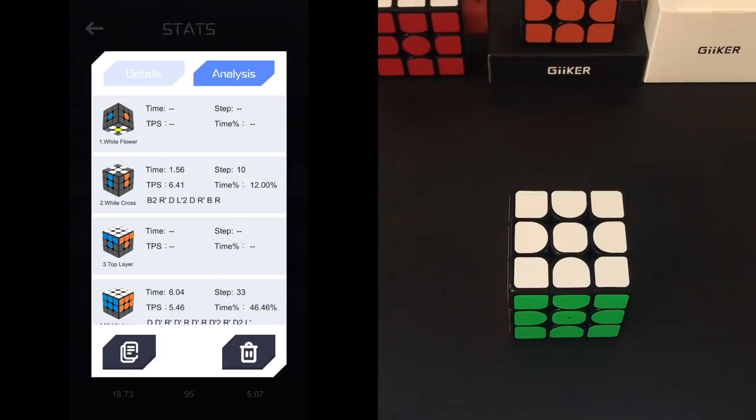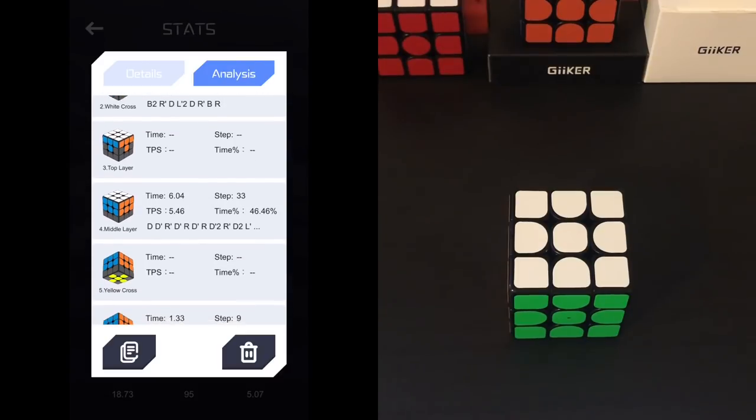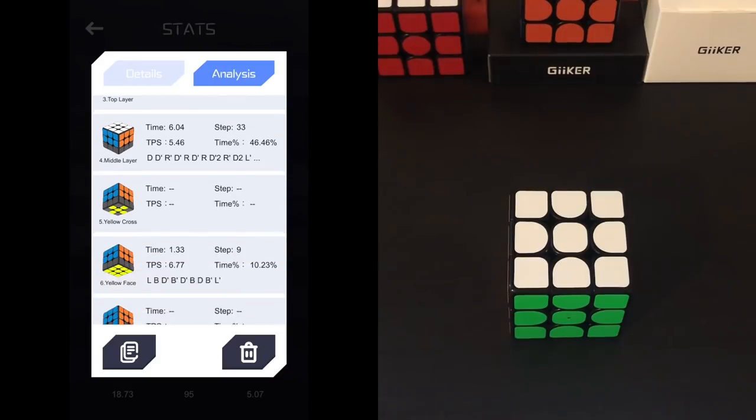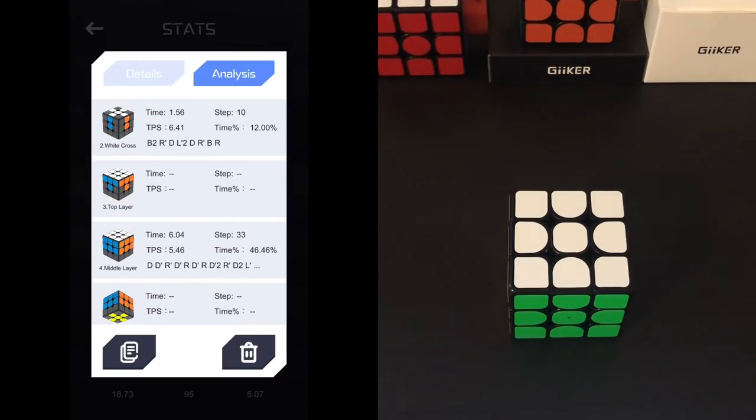So here we just have cross, we didn't do the white flower, we didn't do just the corners, we did F2L. So here we have my time spent on F2L was 6.04 seconds, with 33 moves, TPS 5.46, and 46% of my solve being in F2L. Then you see OLL on the yellow face, and PLL on switching edges. I think this will be most helpful in trying to determine what steps you need to practice more. This is also nice because sometimes it's difficult to reconstruct a good solve you got just because you forgot what moves you made. With this, you no longer have to really worry about that because it just does it all for you.